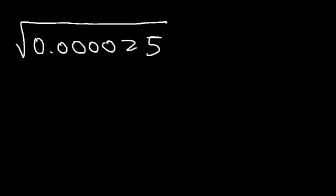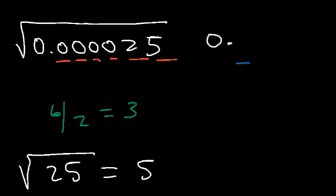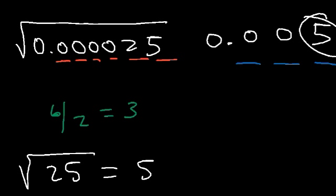Try this one. What is the square root of 0.000025? We know that the square root of 25 is 5 because 5 times 5 is 25. Now how many digits do we have to the right of the decimal point? We have 6 digits. 6 divided by 2 is 3. So after the decimal point, we need to have only three digits — it's going to be 0.005, with the 5 at the very end. If I type in the square root of 0.000025, I get 0.005.